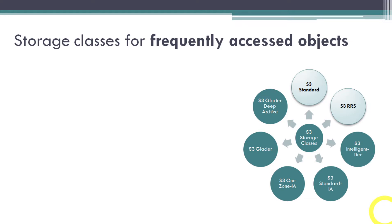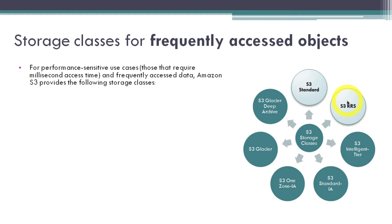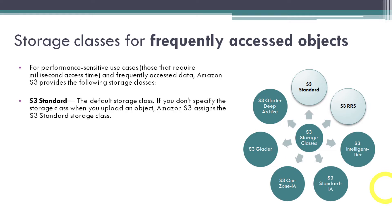Now we are going to look at the first tier: frequently accessed objects. In the frequently accessed tier there are two types: S3 Standard and RRS. For performance-sensitive use cases that require millisecond access and frequently accessed data, Amazon S3 provides S3 Standard. This is the default storage class. If you don't specify a storage class when you upload an object, Amazon S3 assigns the S3 Standard storage class. If you need to very frequently access your data and retrieve it in milliseconds, use S3 Standard.